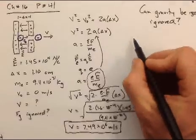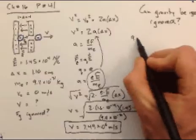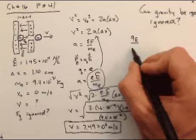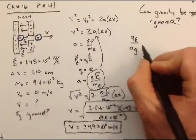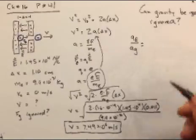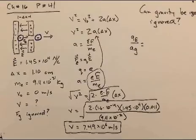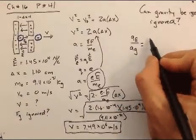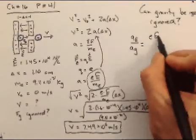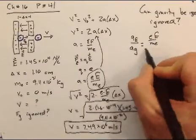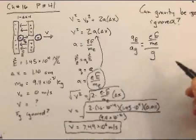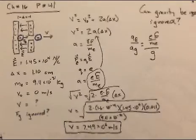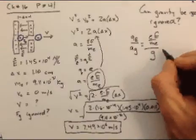Let's compare the acceleration the electron experiences due to the electric field compared to the acceleration the electron field would feel due to gravity. So, we already kind of solved for A sub E, right? That would be E times E divided by M sub E. And let's compare that to the acceleration the electron would feel due to gravity, which is just G, 9.8 meters per second squared.